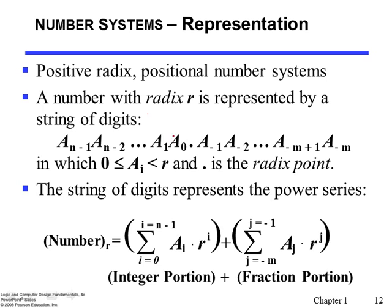The value of a₀ is whatever digit a₀ represents, times the weight in that position. The weight in that position is r to the zeroth power. a₁ is whatever digit a₁ represents, and the value of a₁ is a₁ multiplied by its weight, which is r to the first power. For example, in the decimal number system, suppose we have 23.4.